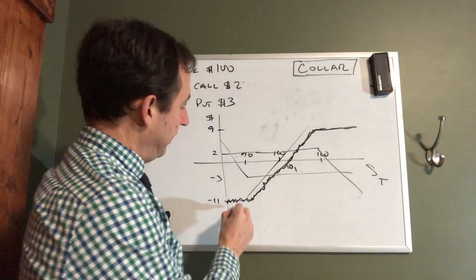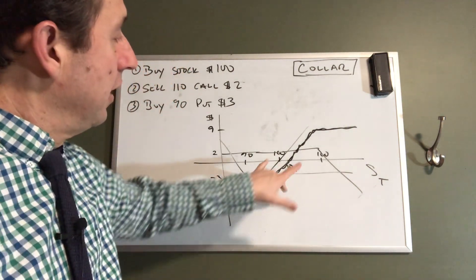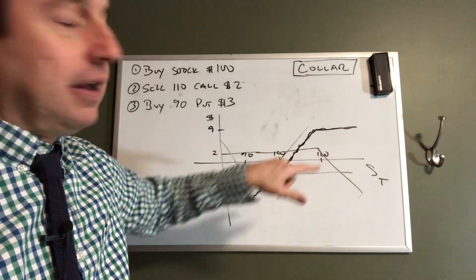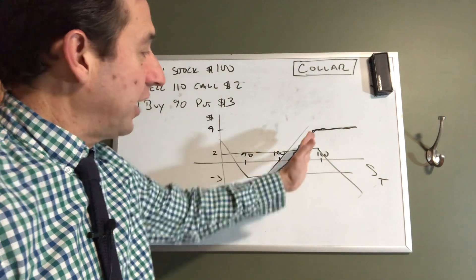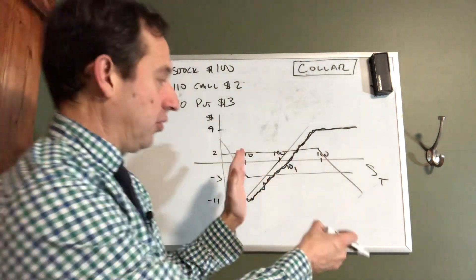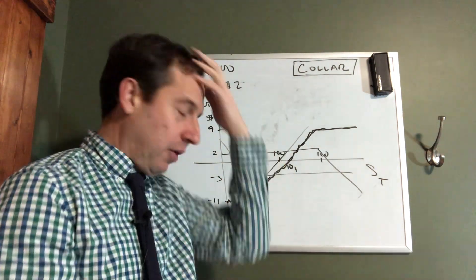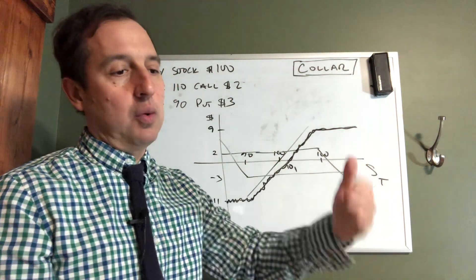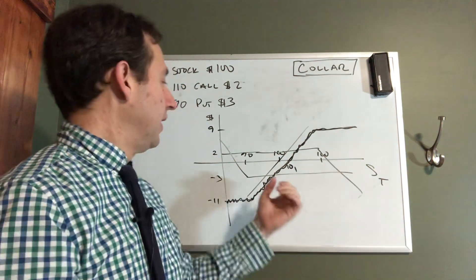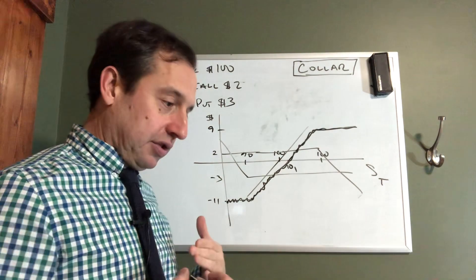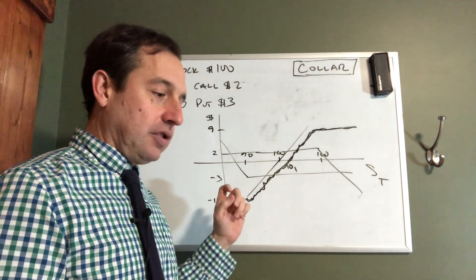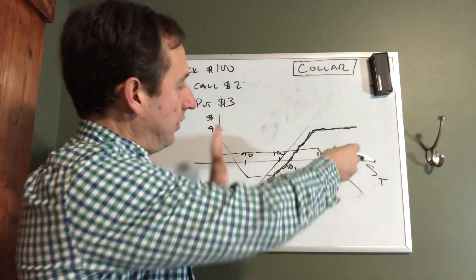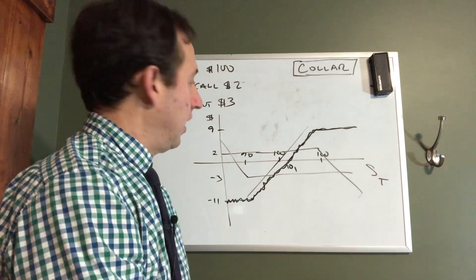What the collar has done is limit our exposure to the stock between 90 and 110. I don't care if it goes above 110 — I'm still long the stock and I'd like it to go up to 110, but after 110 it doesn't matter. Similarly, if it declines to 90, 80, or 70, it doesn't matter. I've limited my exposure to the stock between 90 and 110.